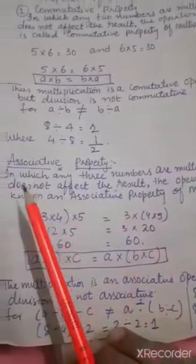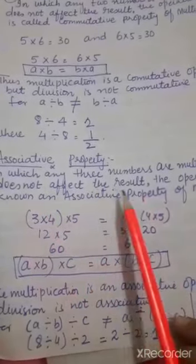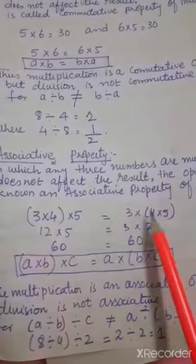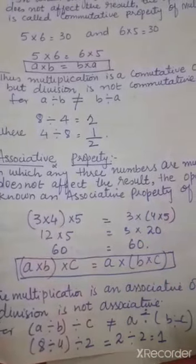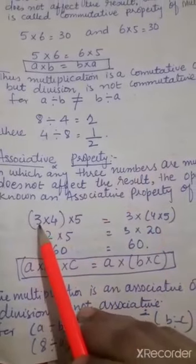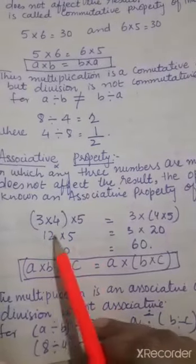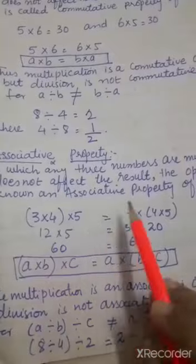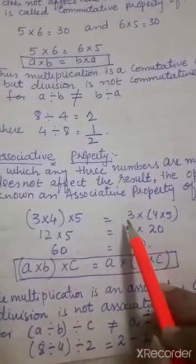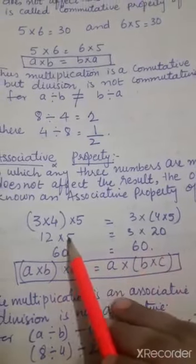Associative property of multiplication: any 3 numbers multiplied with each other does not affect the result. Koi bhi 3 numbers ko multiply karein dono side pe, unhi numbers ko ek dusre se multiply karein, but unki placing change ho jaye. For example, (3 multiply by 4) multiply by 5 — 3 fours are 12, multiply by 5. On the other side, 3 multiply by (4 multiply by 5) — 4 multiply by 5 is 20, 3 multiply by 20.